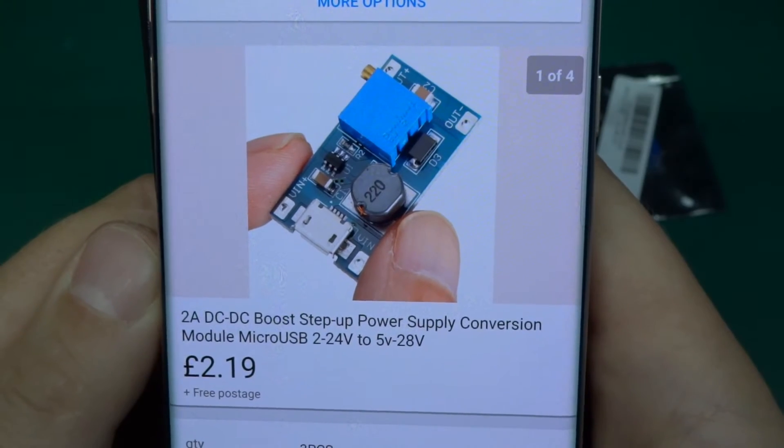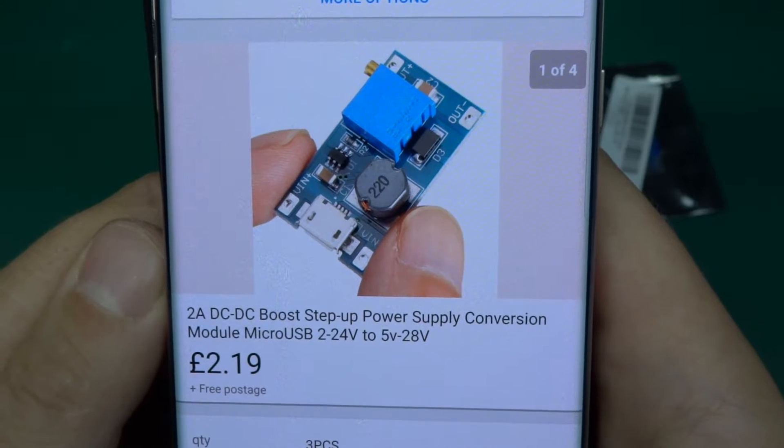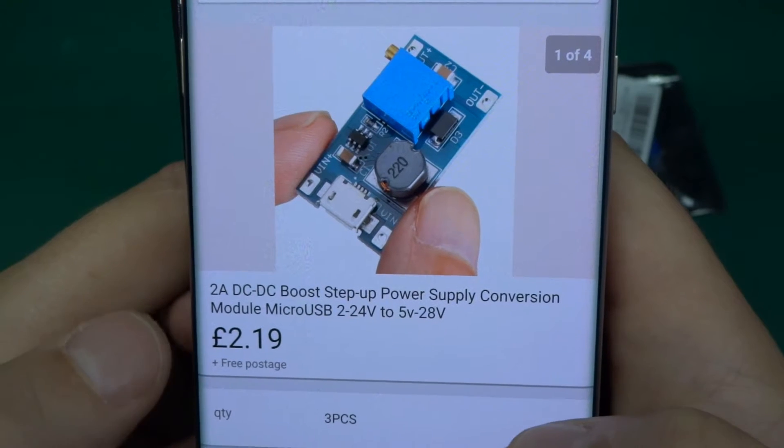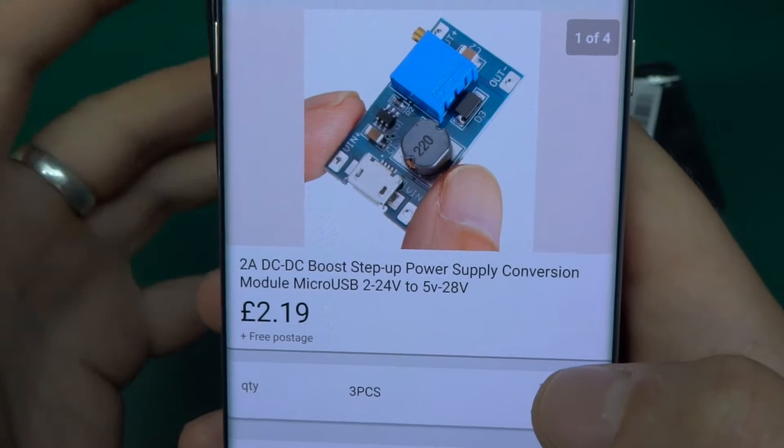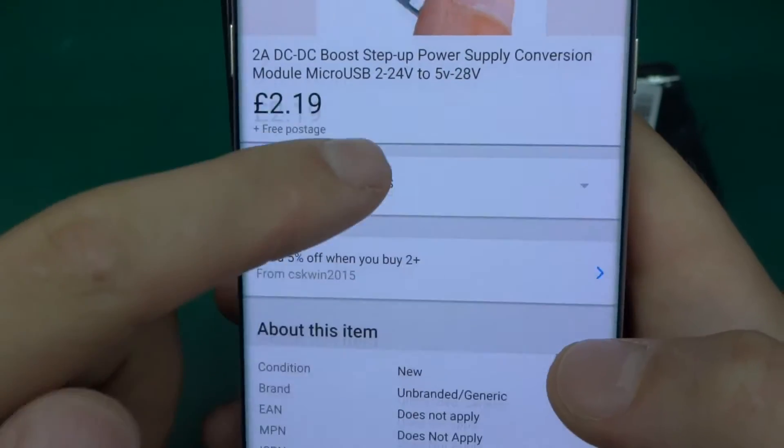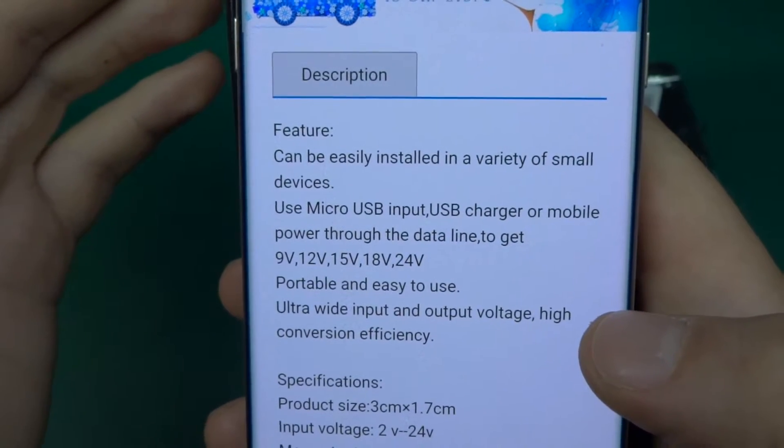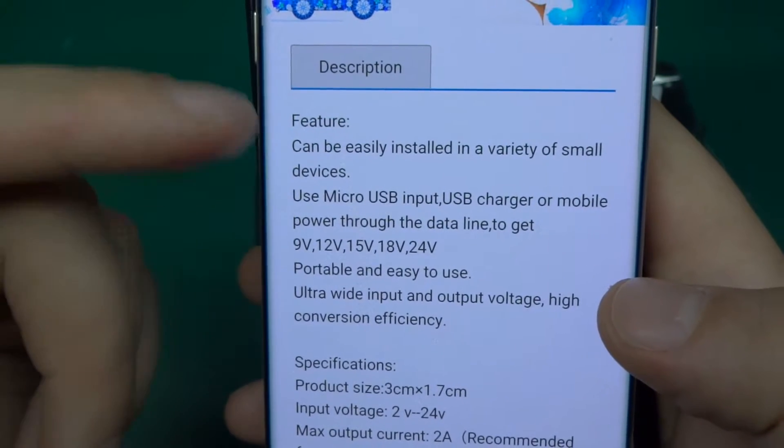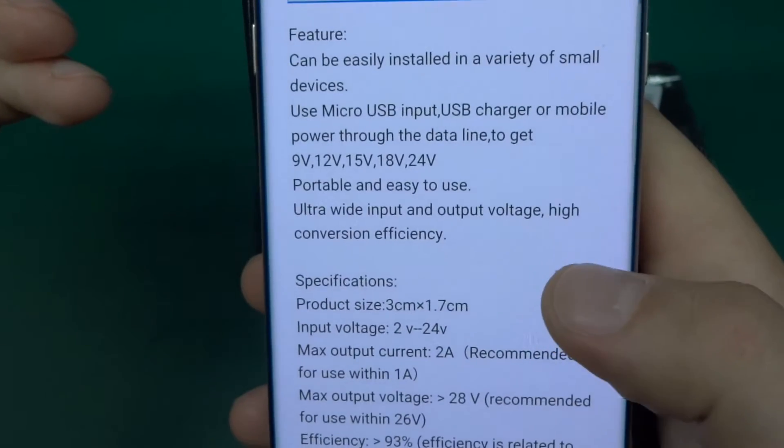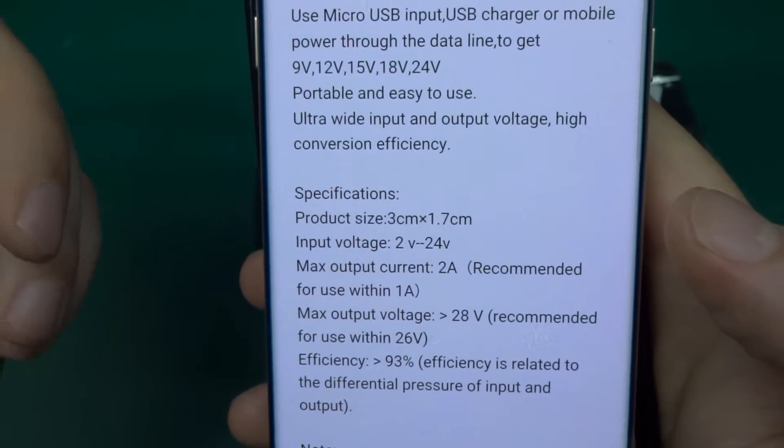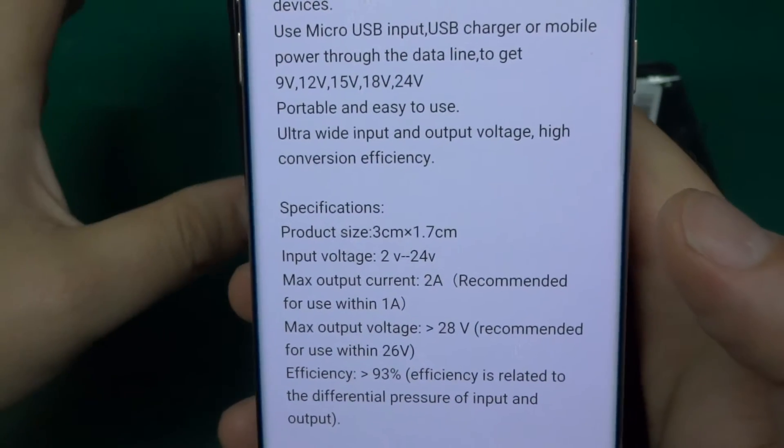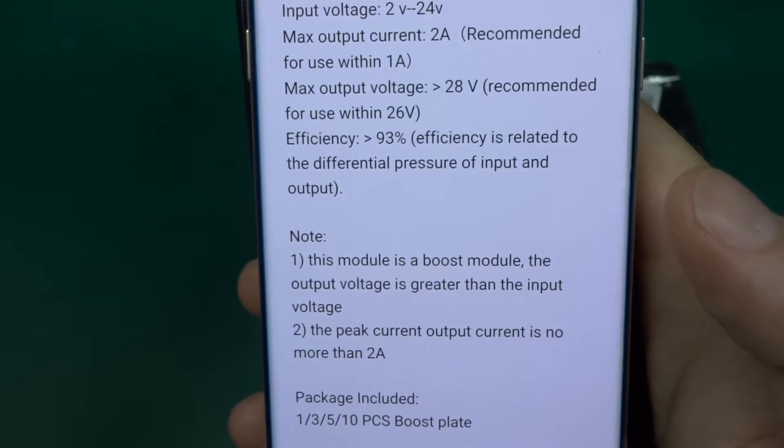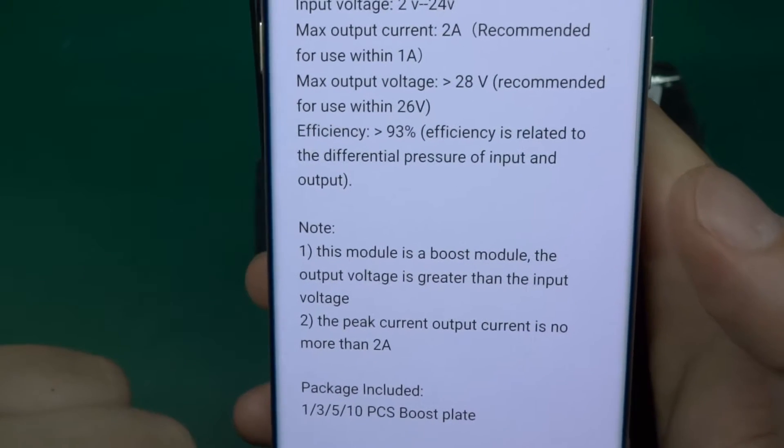Here it is: 2 amp DC DC boost step up power supply conversion module micro USB 2 to 24 volts to 5 to 28 volts. 2 pounds 19 plus 3 postage for three pieces, so under a pound per unit. Specifications: max output current 2 amp recommended for use within 1 amp. Yes, because at 2 amps everything will desolder itself. This module is a boost module, the output voltage is greater than the input voltage. Let's see whether it performs.